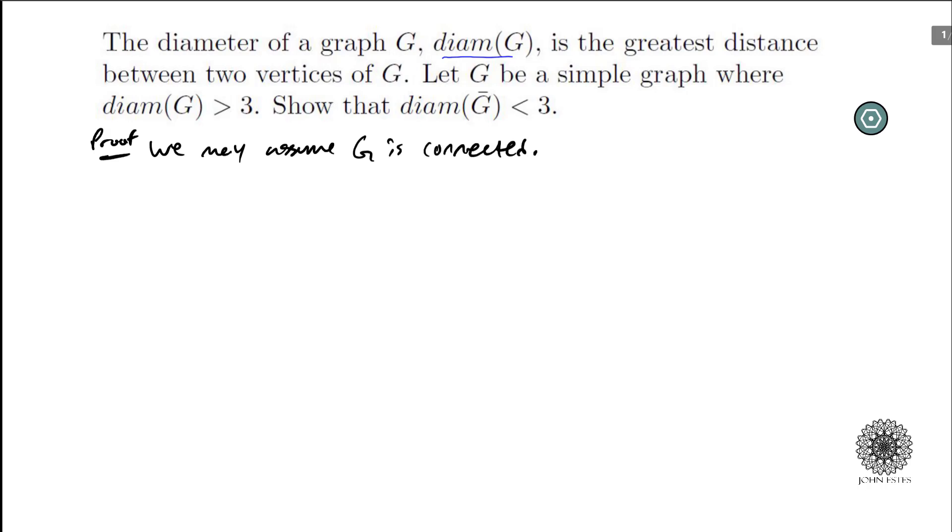Alright now why is that? Because if you had two components, you get vertices here and vertices here, you see that in the complement you're going to have lots of edges between those components. And so actually the diameter of your complement is going to be less than or equal to 2. Okay so that's an easy case to rule out.